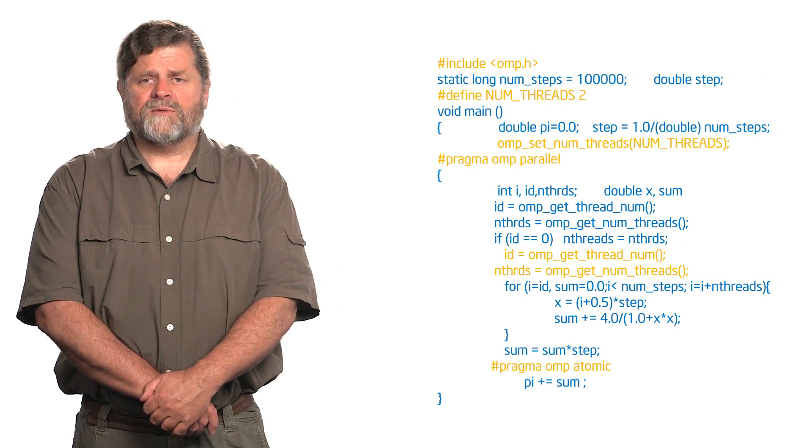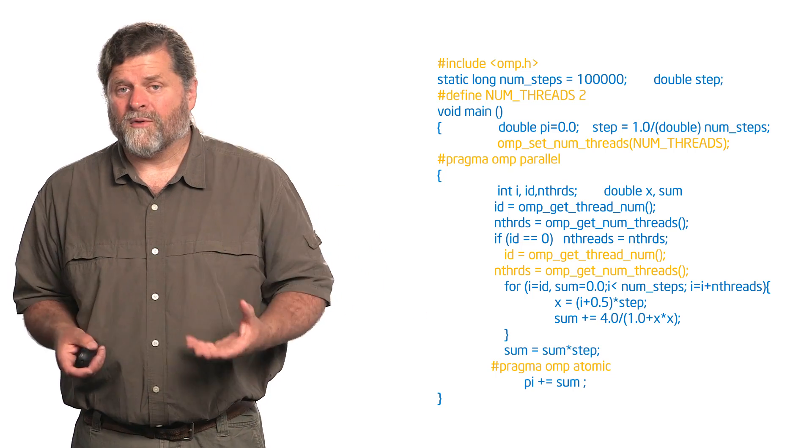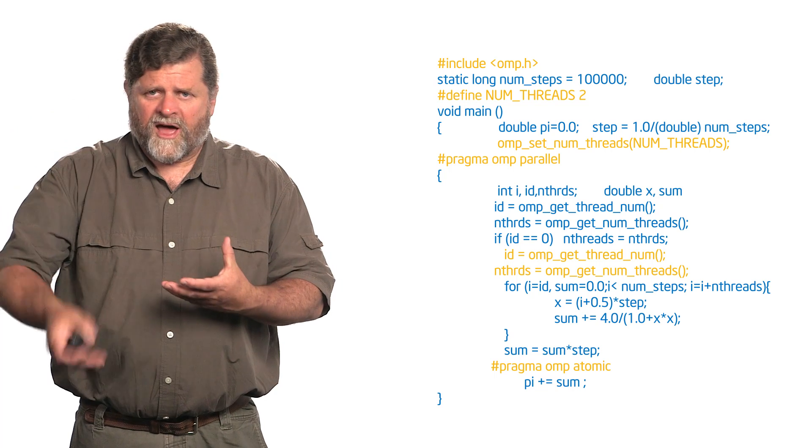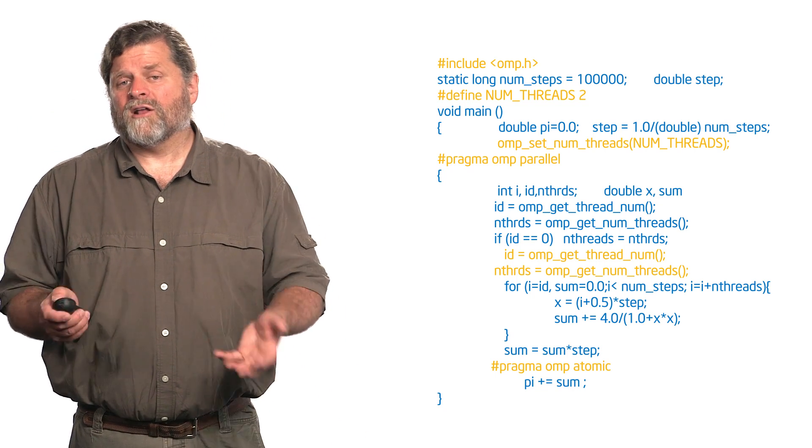Think carefully about where you put the critical section, because it adds a lot of overhead and that can kill your performance. In this particular case, because I'm just doing a simple read-modify-write — reading PI, modifying by adding in the sum, and writing it back out — I could also have done this with an atomic, as you can see in this version of the program. It looks almost exactly like the version with a critical section, but it gives me a very lightweight and quick way to do the mutual exclusion. That completes this look at the SPMD pattern to solve the PI program. Next, we'll look at a different way of splitting up the work as we move into parallel loops in OpenMP.